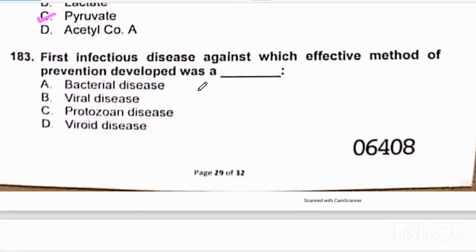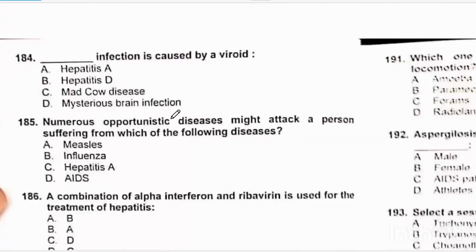First infectious disease against which an effective method of prevention was developed was a viral disease. Correct option will be beta. Hepatitis D infection is caused by a viroid, basically hepatitis delta, that is defective. We also use elimination techniques. Hepatitis A causative agent is hepatitis A virus HAV. Mad cow disease or mysterious brain infection is caused by prions. We have option beta, the viroid is defective and more like a viral disease.